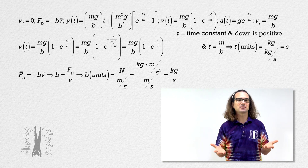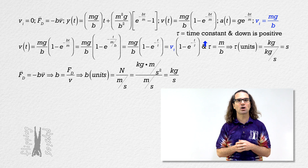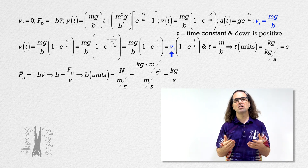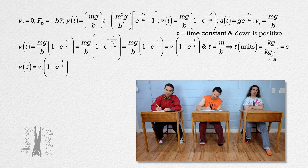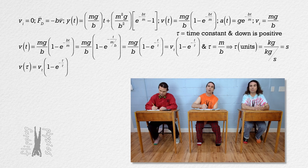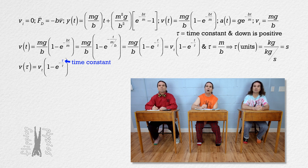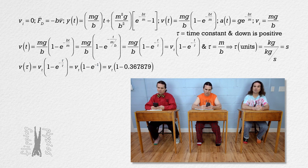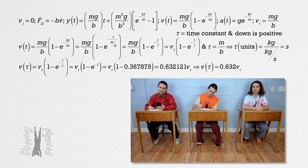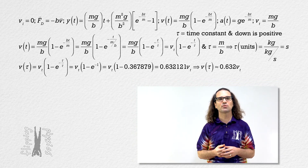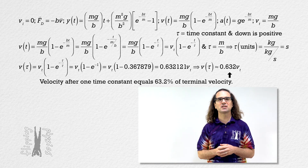I'm working on describing the time constant. First, realize we can substitute terminal velocity into our velocity equation. Bo, please solve for the object's velocity at one time constant, or time equals tau. Velocity at one time constant equals the terminal velocity times the quantity 1 minus e to the power negative time constant over time constant. Time constant over time constant equals 1, and e to the negative 1 equals 0.367879. 1 minus that equals 0.632121. So the velocity at one time constant equals 0.632 times the terminal velocity.